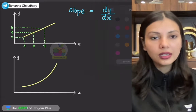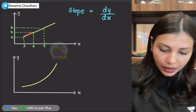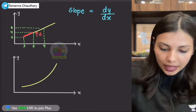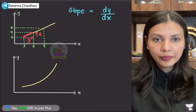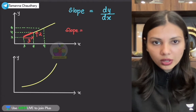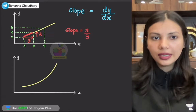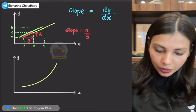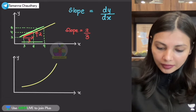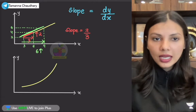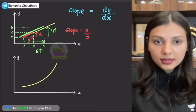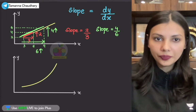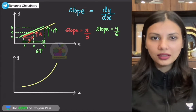Let me give you an example. Look at the first graph. In this part of the graph, if you consider a segment, there is a 2 unit increase in the Y axis quantity and a 3 unit increase in the X axis quantity. What I want all of you to realize here is that this is a straight line graph, and it has a constant slope.